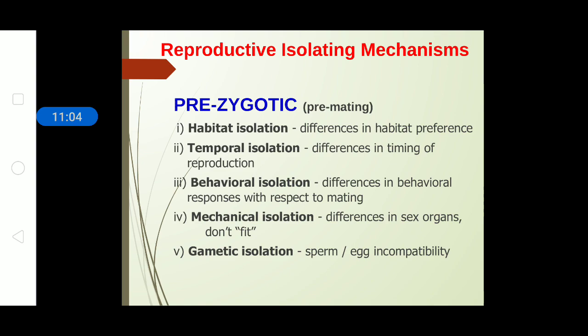Prezygotic factors influencing reproductive isolation include: habitat isolation — two animals of different habitats cannot mate (e.g., a fish in water and a goat on land cannot come together); temporal isolation — the timing of reproduction differs, such as one frog species reproducing in summer and another in winter, so despite being frogs they cannot reproduce.